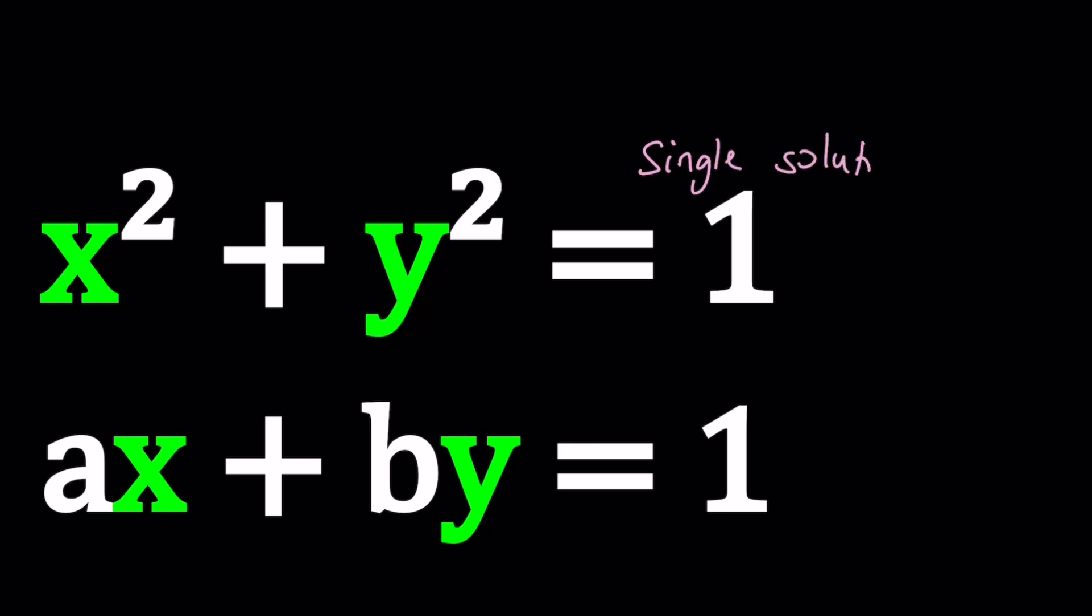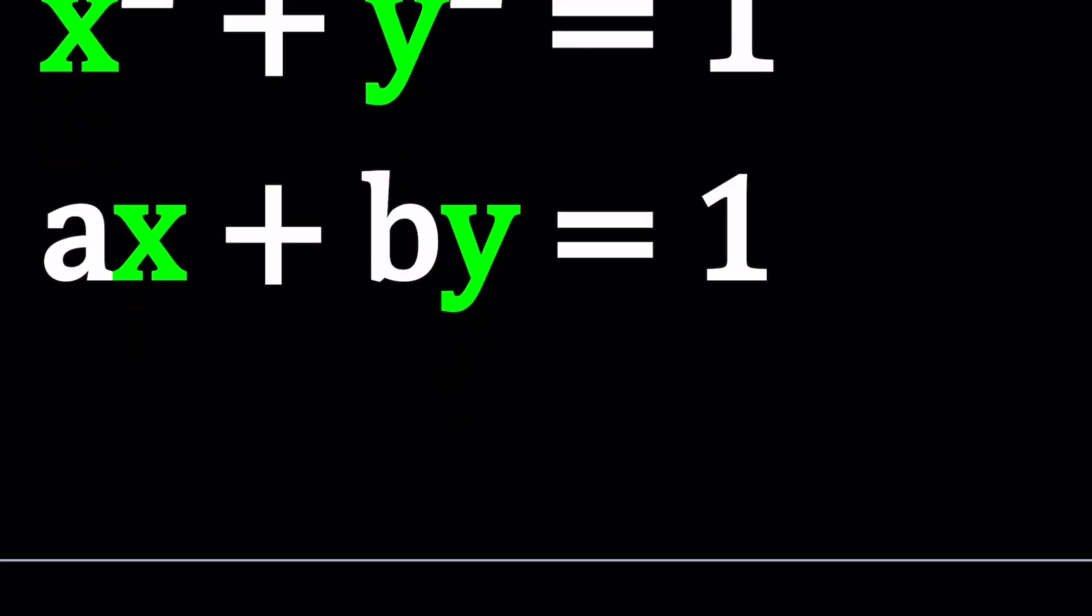In order to get one solution from this system, what should be the values of a and b? So that's what we're looking for, and I'll be presenting two methods. And I think you're going to love this problem. Anyways, let's start with the first method.